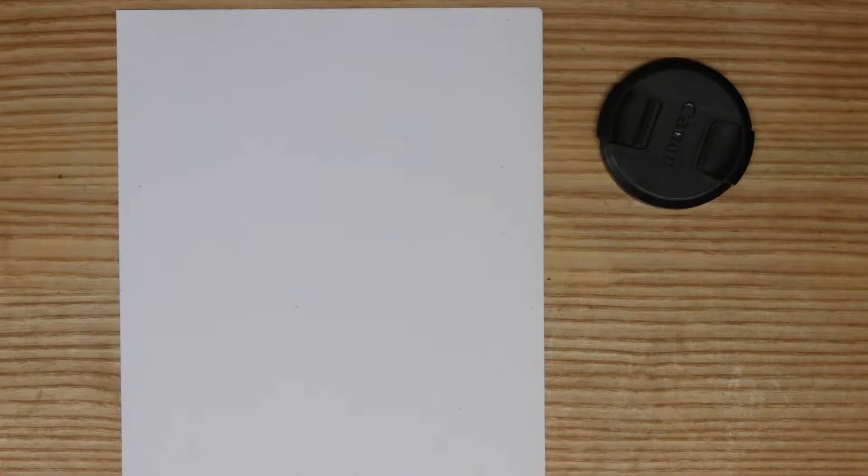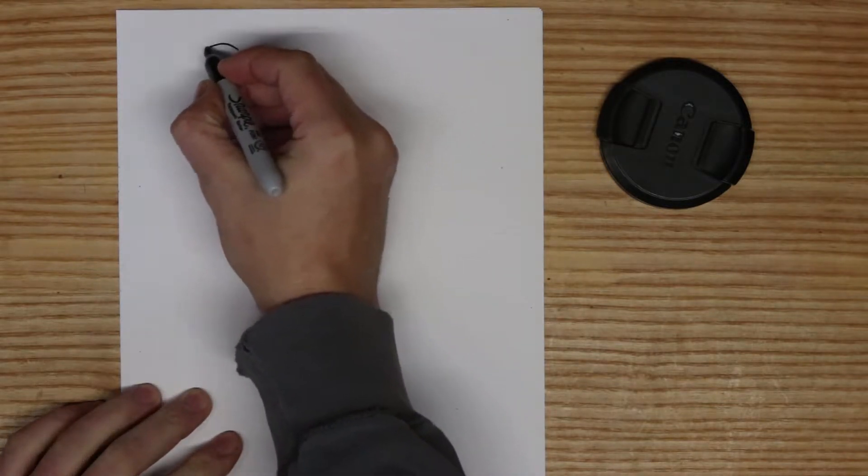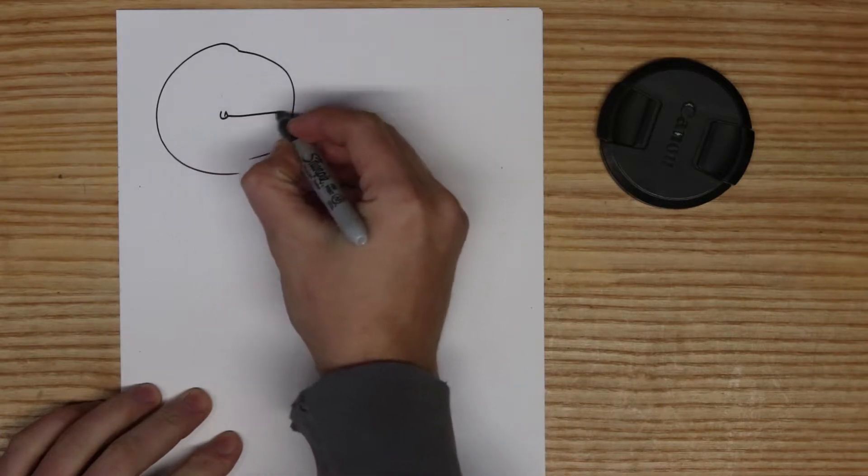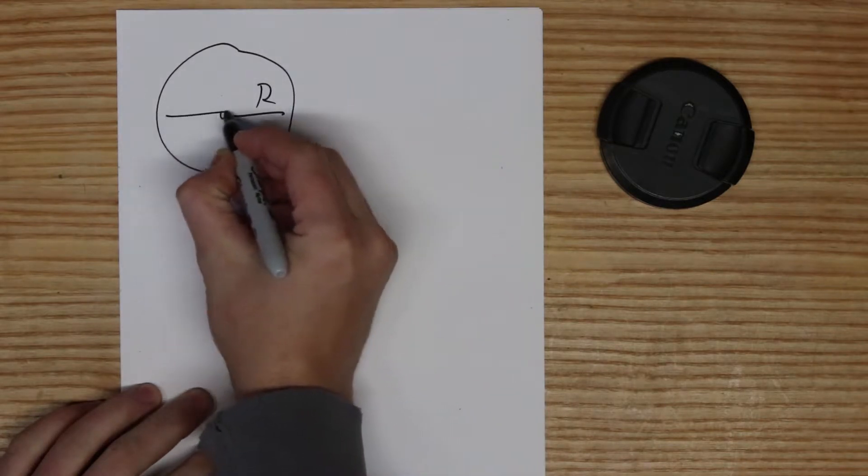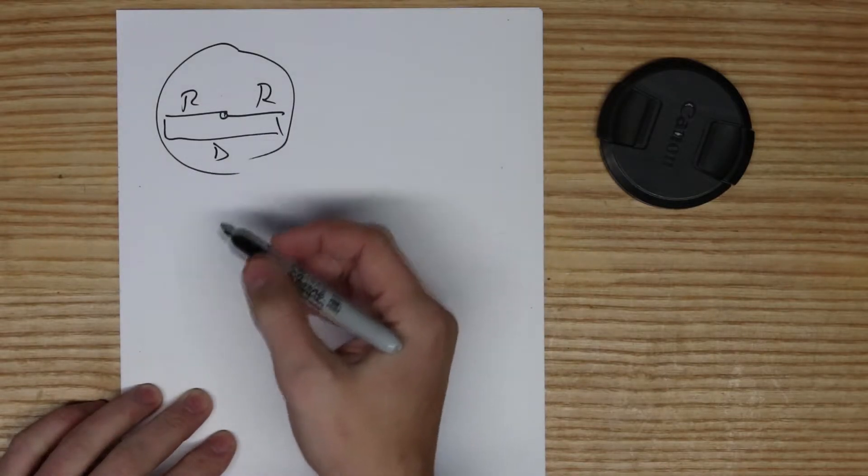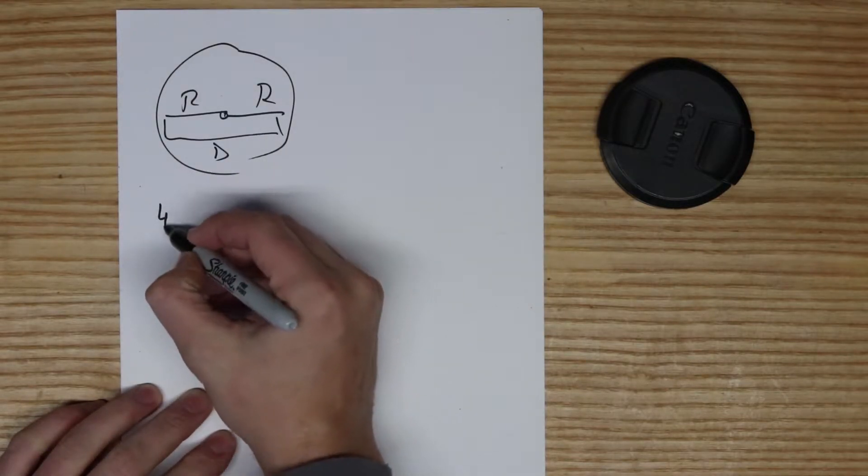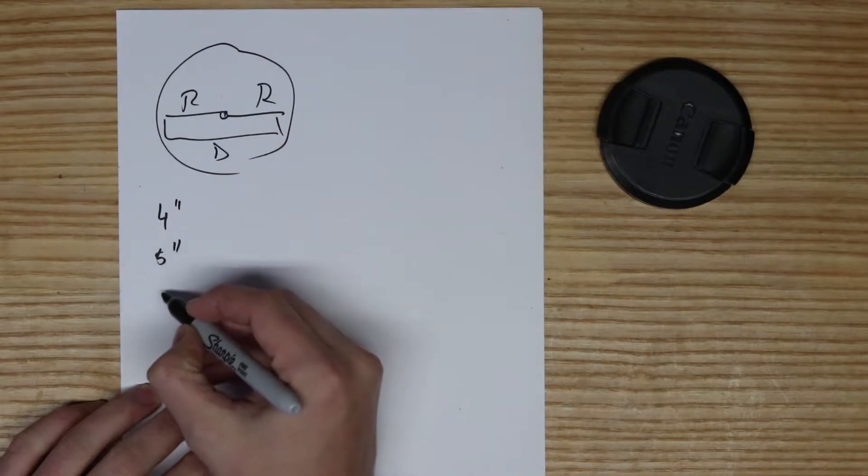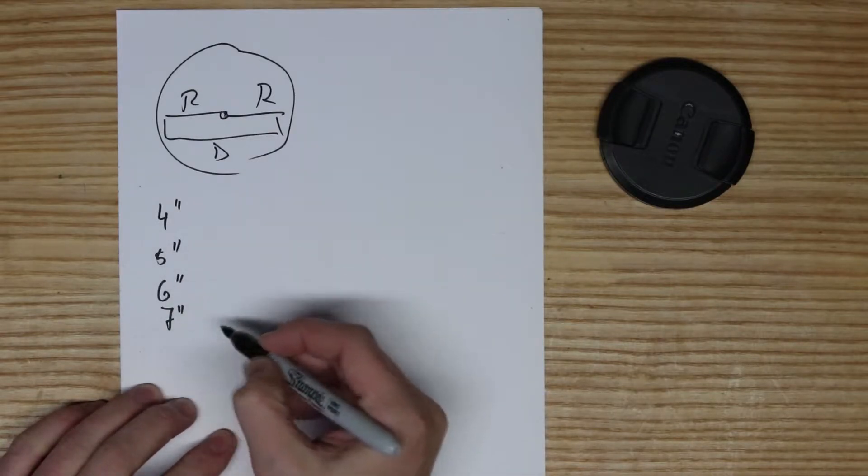The most important thing is the size of your drive wheel. Let's say this is your drive wheel. This is the radius of it. You have two radiuses equals the diameter. This is the way we buy them. Let's say standard are probably four, five, six, maybe a seven inch.